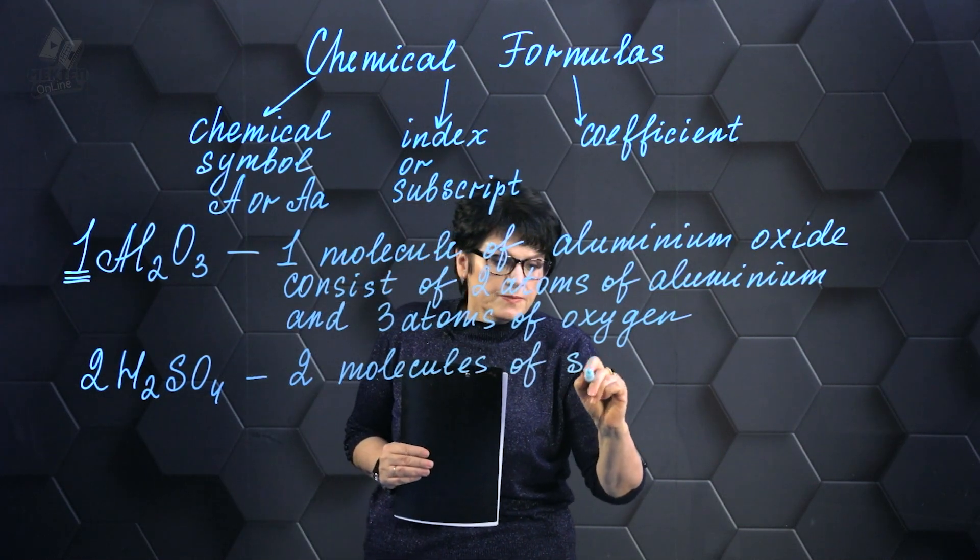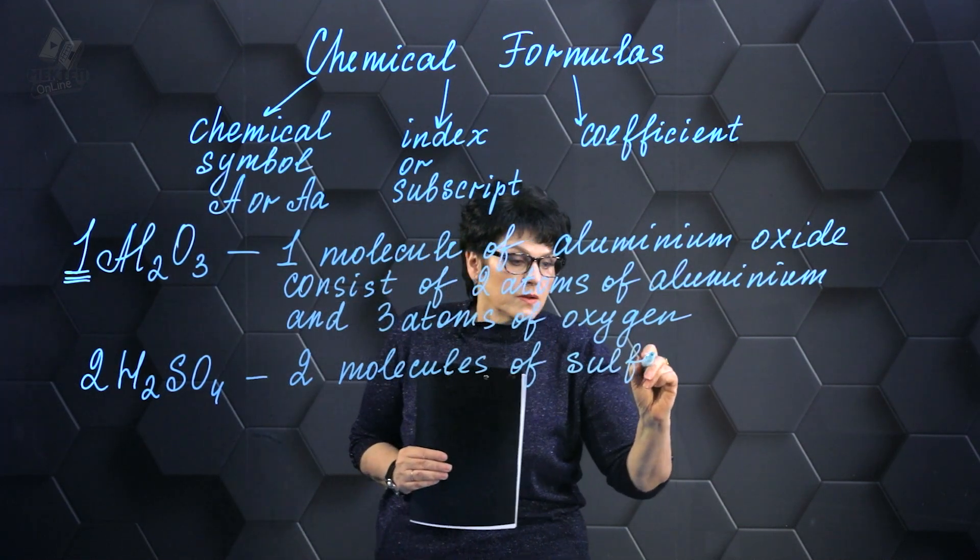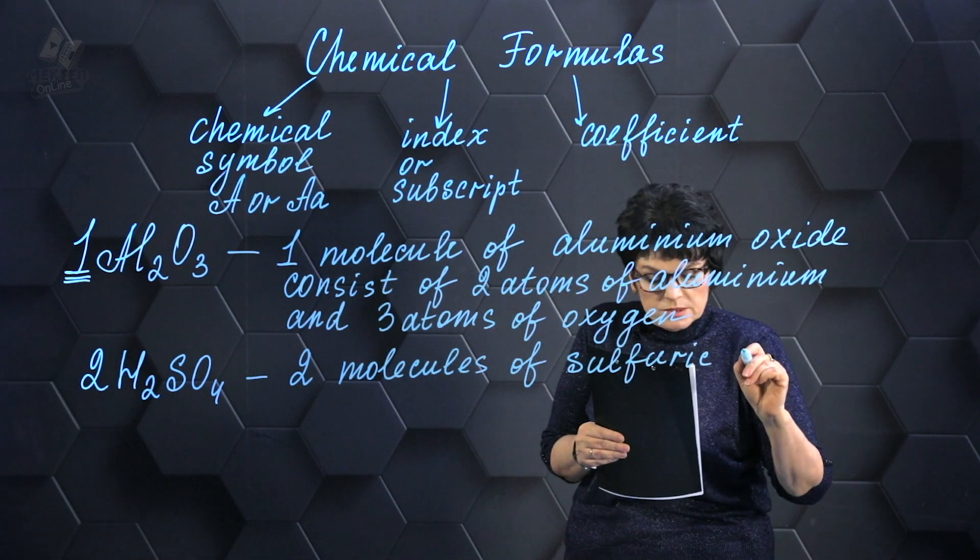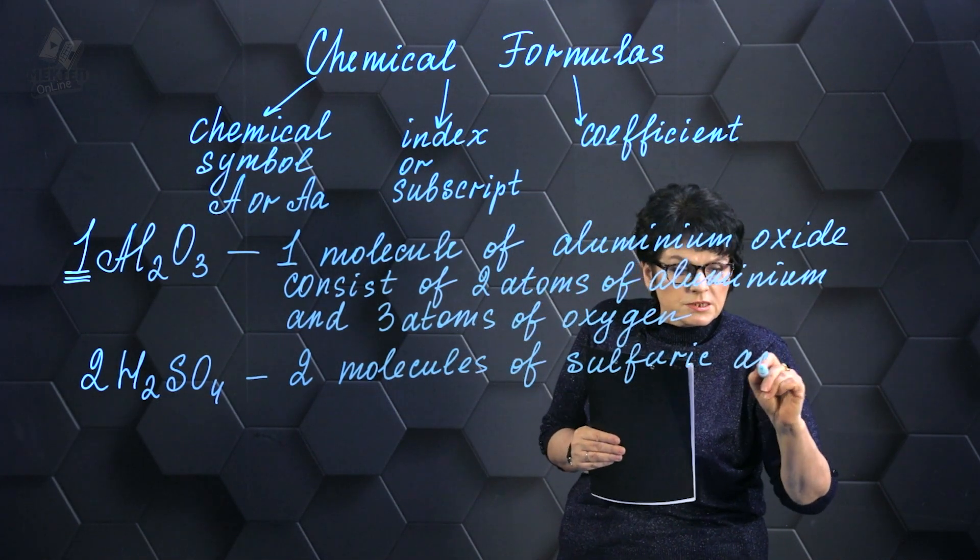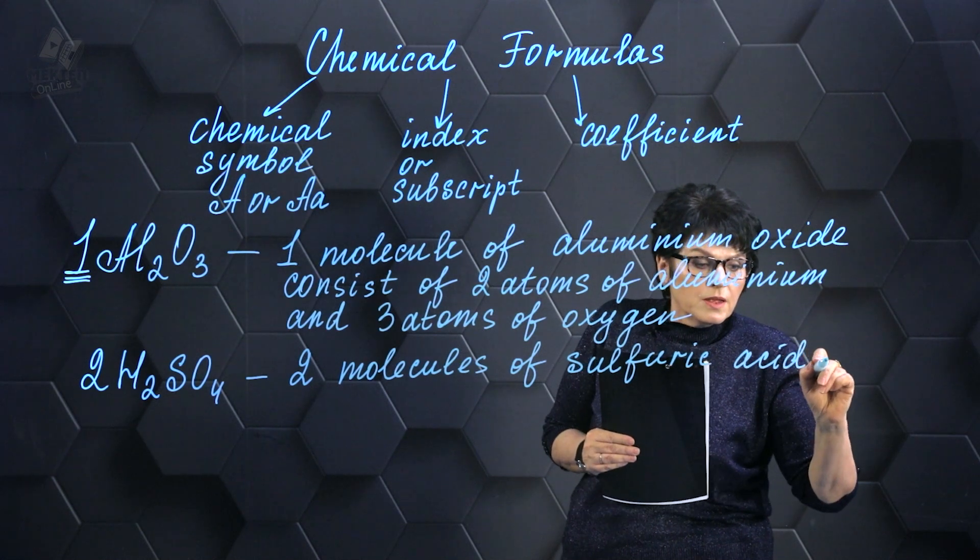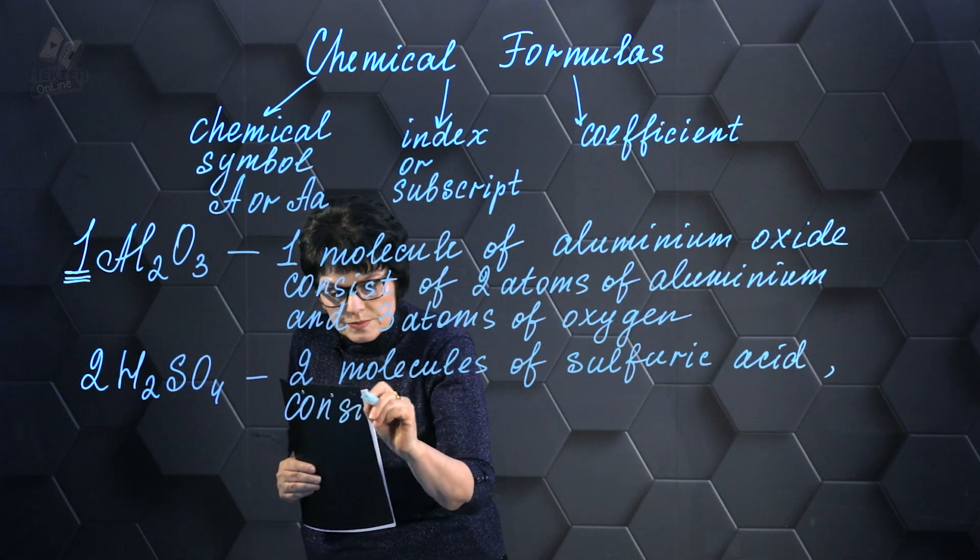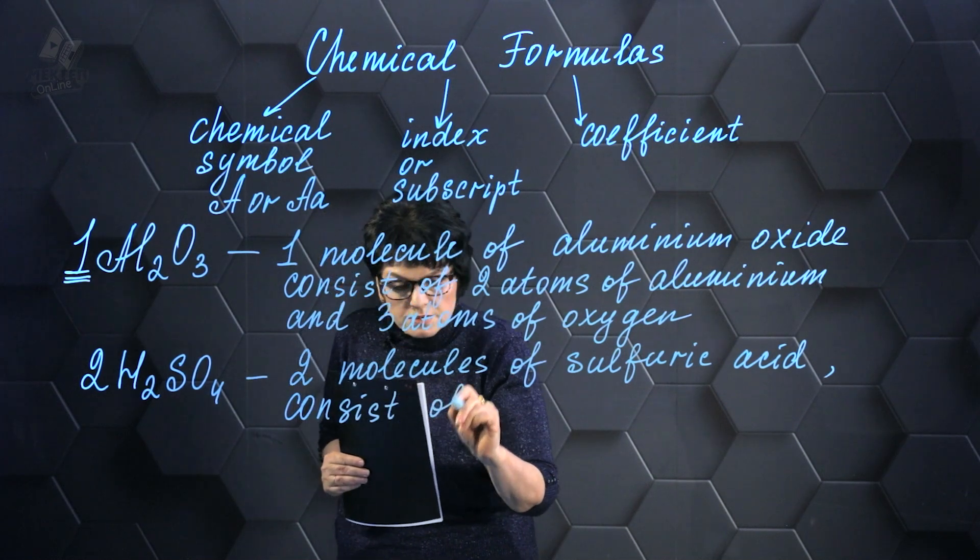Sulfuric acid, a highly corrosive and strong acid, is a substance commonly used in various industrial processes. And it is formed by, in this specific case, these particular elements that contribute to its composition.